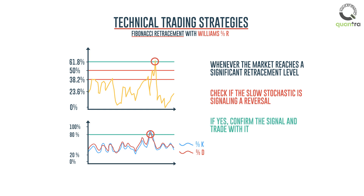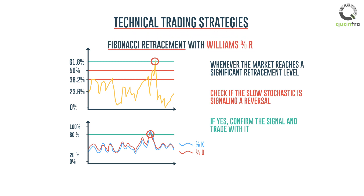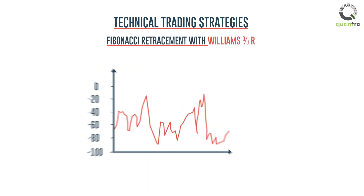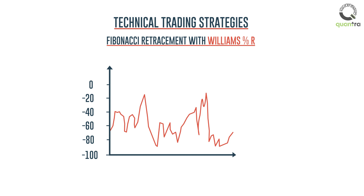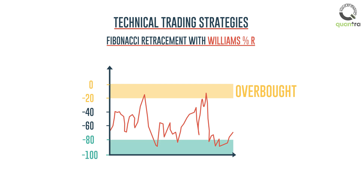Now, as we have understood the concept and working of Fibonacci retracement, we can combine another indicator with it to form a strategy. In this strategy, we will be using Williams Percent R as the second indicator. Readings from 0 to minus 20 are to be considered as overbought, and readings from minus 80 to minus 100 as that of an oversold condition.